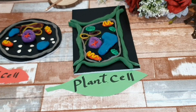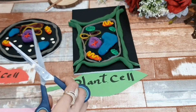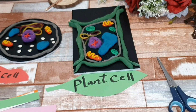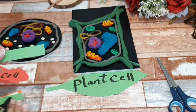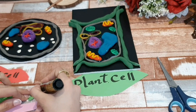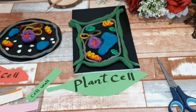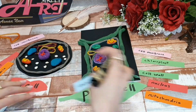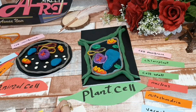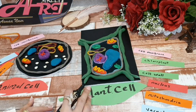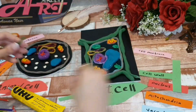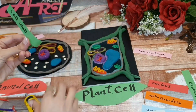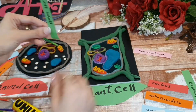Now we can use the colored paper to make the labels. We will write each part name, and with glue we can fix it on a wooden stick and then attach it to the corresponding part.